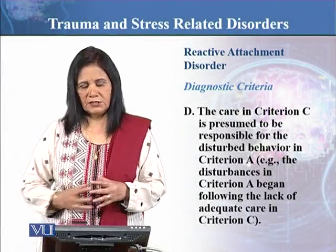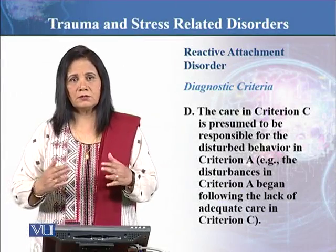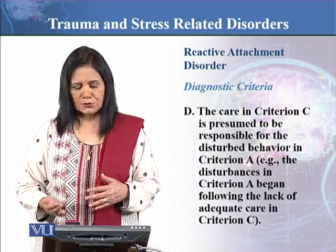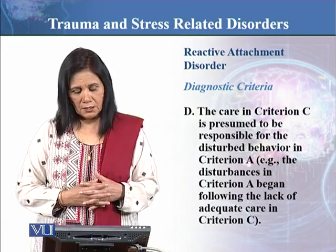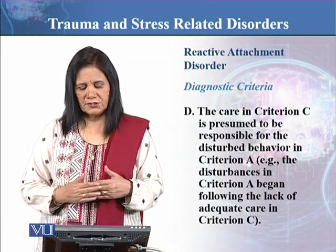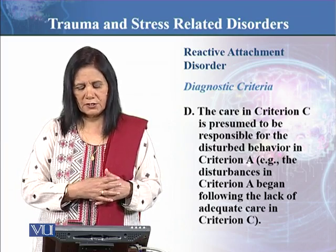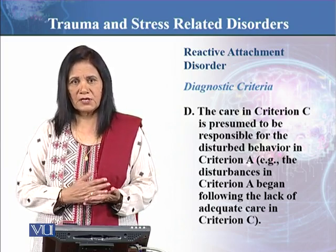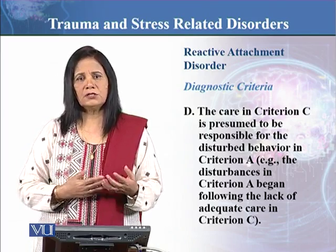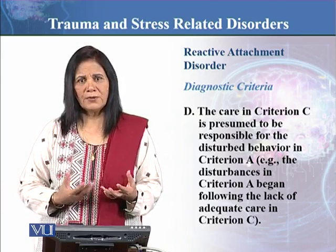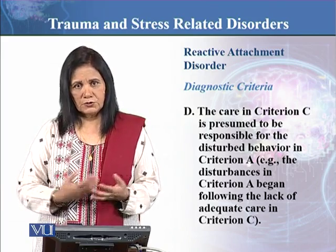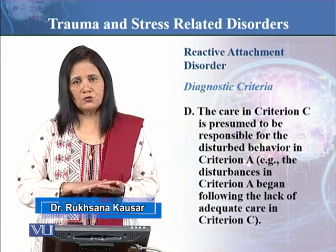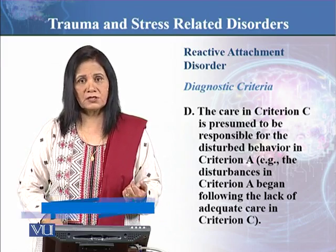Criterion C is the event associated with the symptoms. The care in Criterion C is presumed to be responsible for the disturbed behavior in Criterion A — for example, the disturbance in Criterion A began following the lack of adequate care in Criterion C. The three causes in Criterion C are: care not provided properly, caregivers changing very quickly, or being in institutions with limited caregiving opportunities. These three are the reasons attributed to the symptoms in the child discussed in Criterion A.